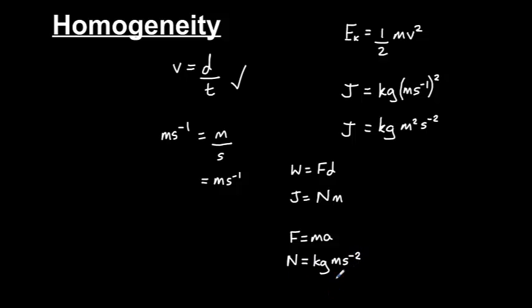Now we know what the newton is expressed in base units. We can plug that into here to find out what the joule is in base units. So a joule is equal to a newton metre, which is equal to a kilogram metres per second squared, multiplied by a metre. And that will give us kilogram metres squared per second squared.